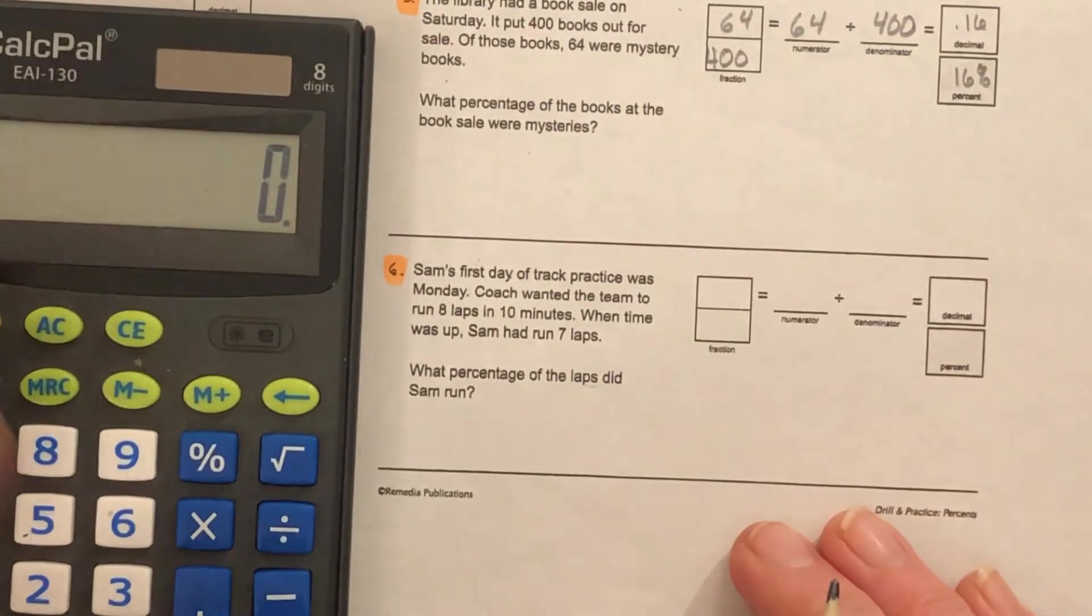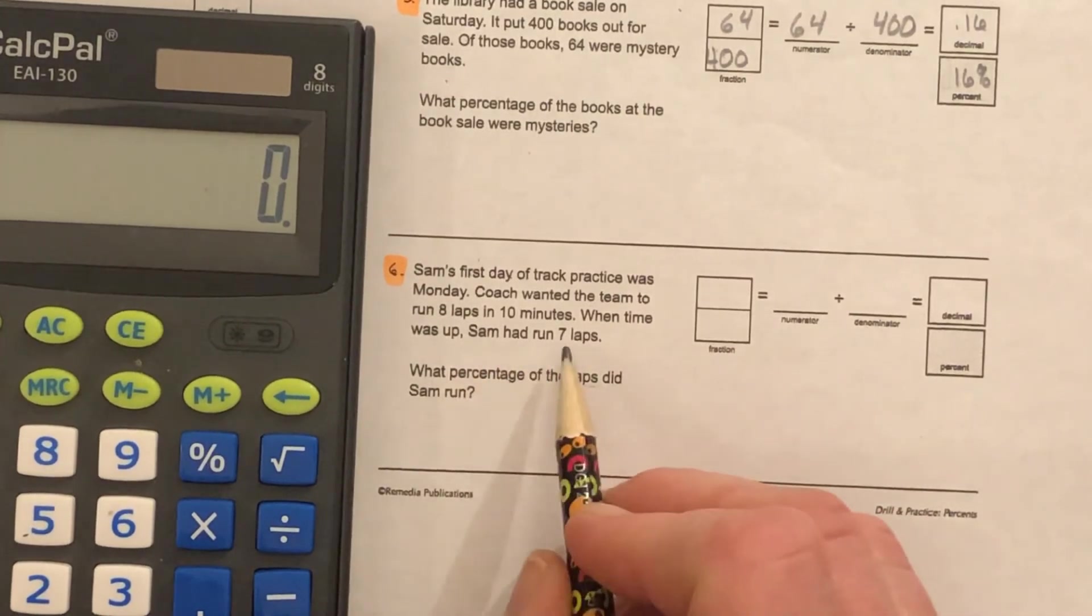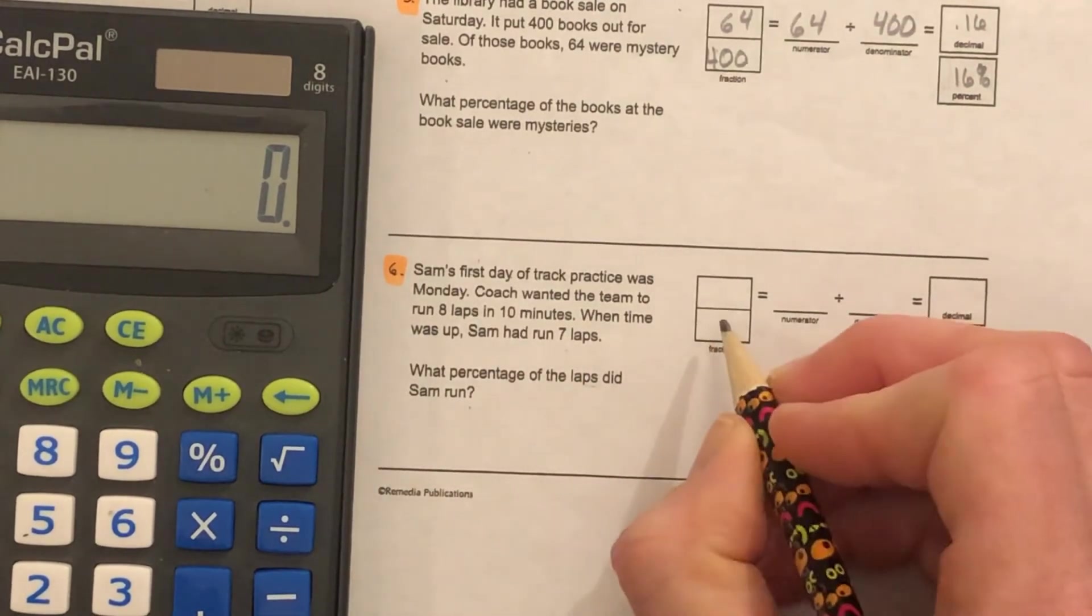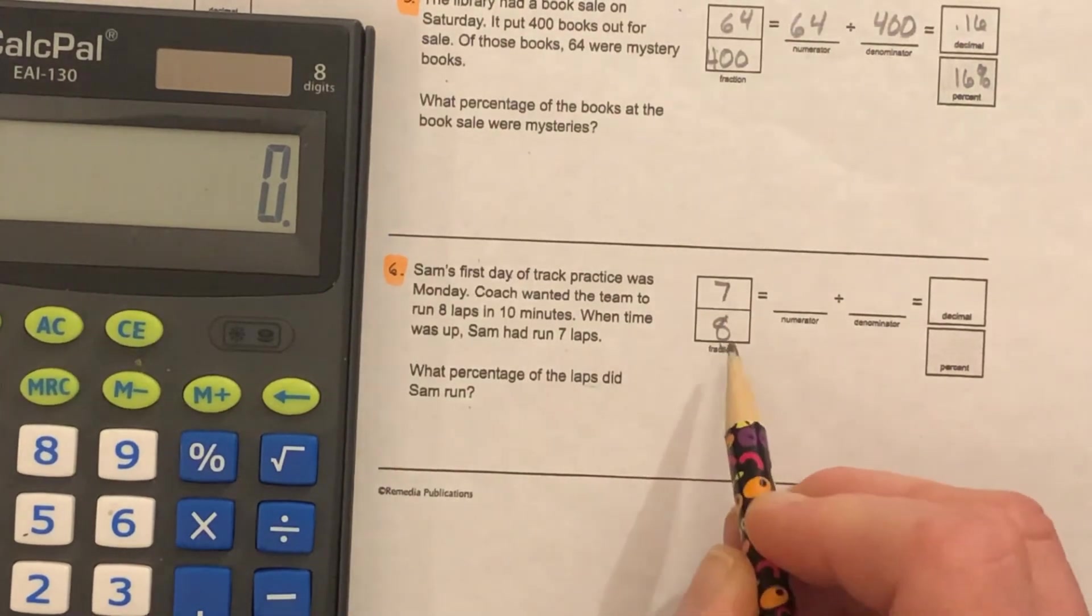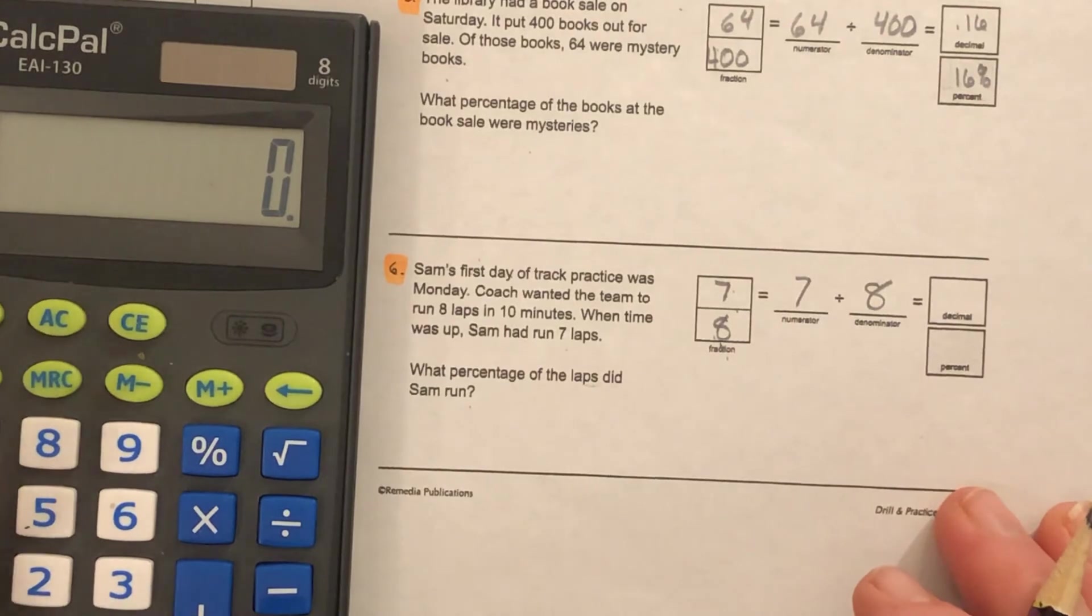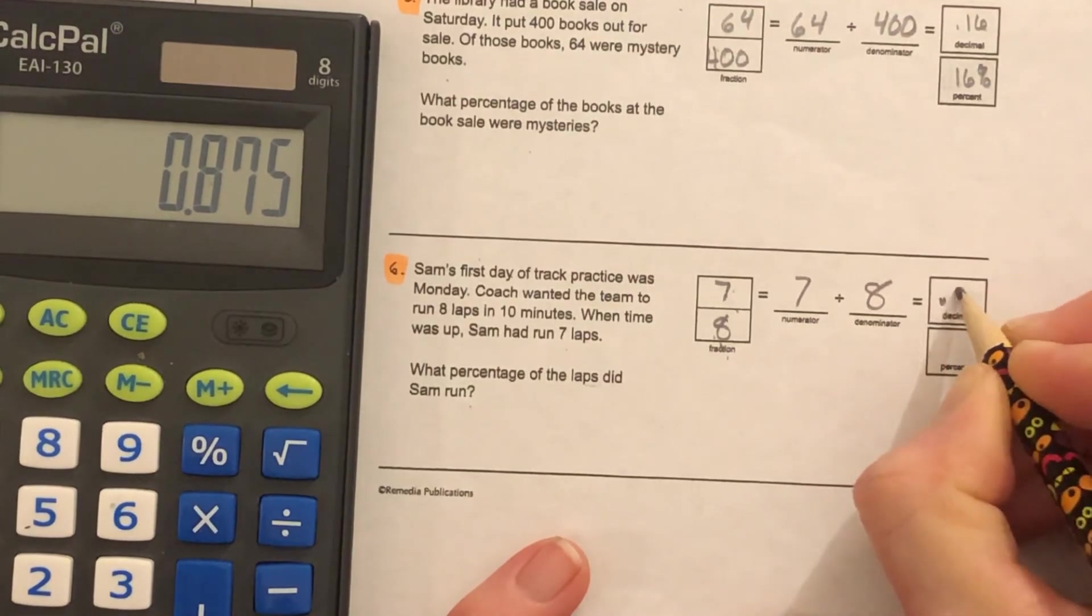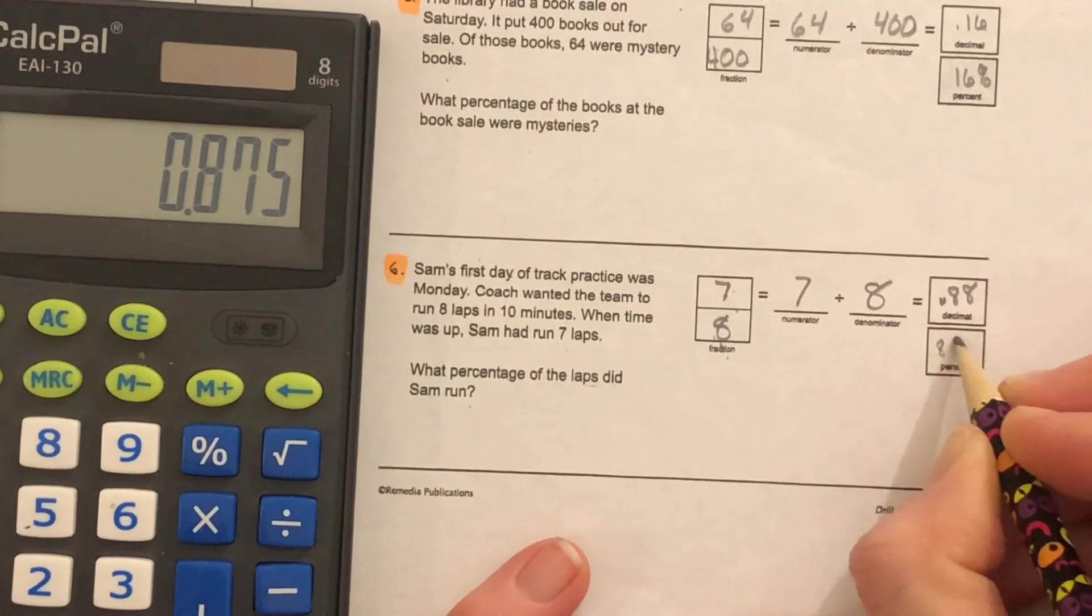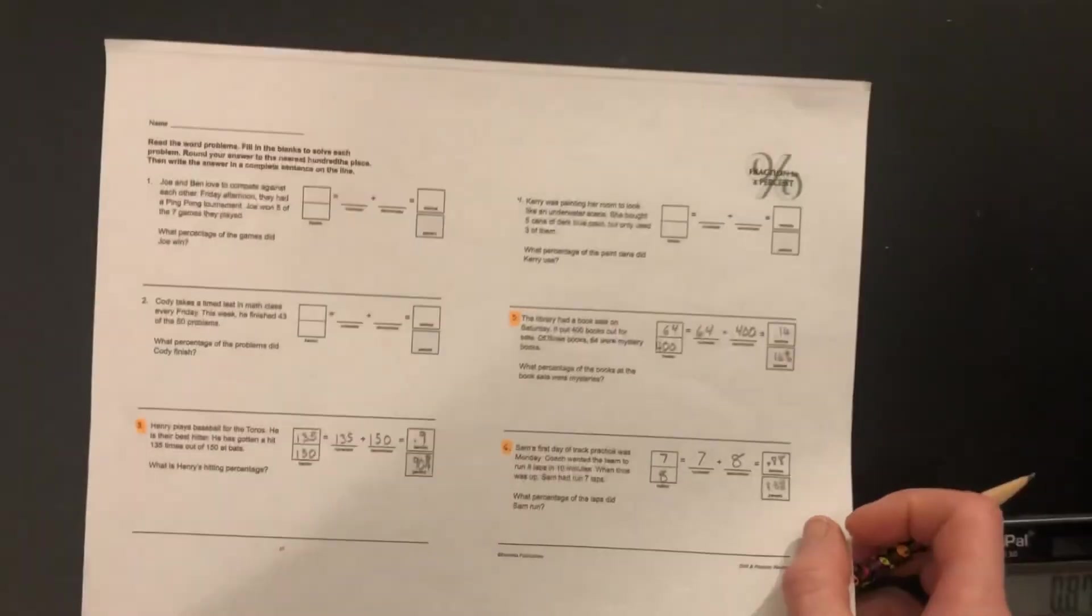Let's look at number six. Sam's first day of track practice was Monday. Coach wanted the team to run 8 laps in 10 minutes. When time was up, Sam had run 7 laps. What percent of the laps did Sam run? He was supposed to run 8 laps total, but he only ran 7 laps. So 7/8: seven divided by eight. When we round that to the nearest hundredth, we get 0.88, eighty-eight hundredths, which becomes eighty-eight percent.